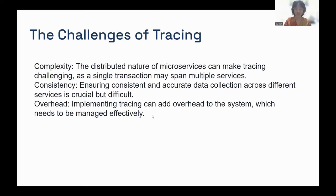What are the challenges when trying to do tracing? First is complexity — the distributed nature of microservices makes tracing challenging, as a single transaction might span multiple services. Second is consistency — maintaining consistent and accurate data collection across different services is crucial but difficult. Third is overhead — implementing tracing can add overhead to the system, which needs to be managed effectively to avoid bottlenecks in the tracing system itself.